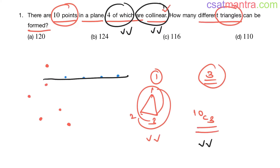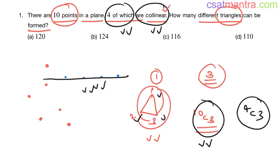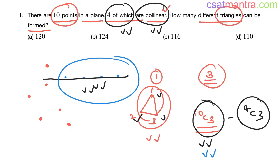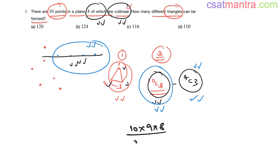Points which are on the same line can never form a triangle — no three collinear points can form a triangle. So these four collinear points cannot form any triangle. The number of triangles that could be formed from those four points if they were non-collinear is 4C3, and those are already included in the 10C3 count. Since they are collinear and form no triangle, we subtract 4C3.